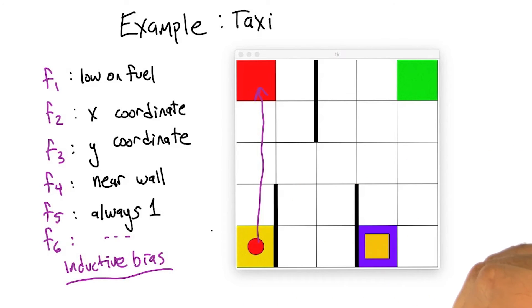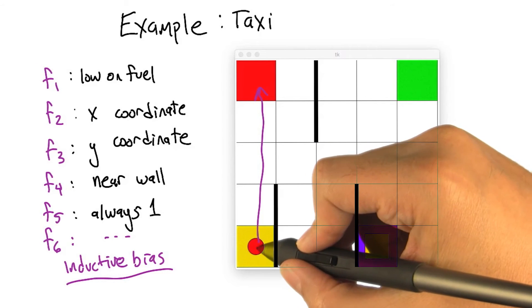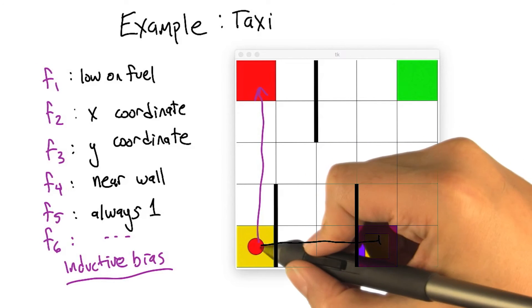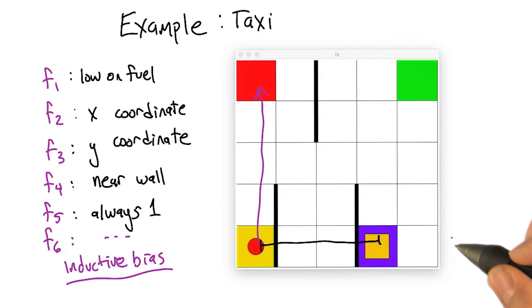So, for example, if we had this egocentric notion of how far away a person is from a taxi, then so long as a person is, say, two steps away from a taxi, any state where a person is two steps away from a taxi looks the same, or it looks very similar. In fact,